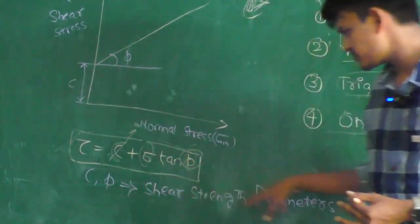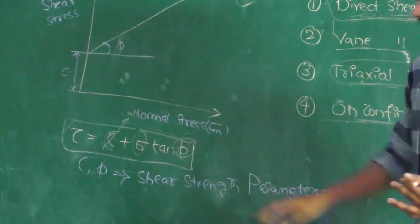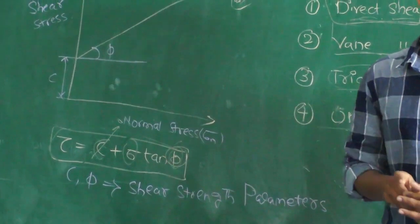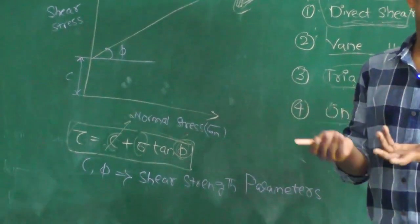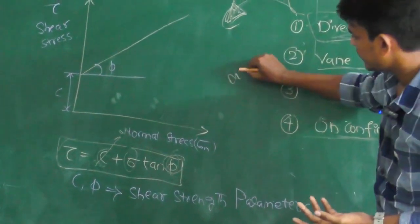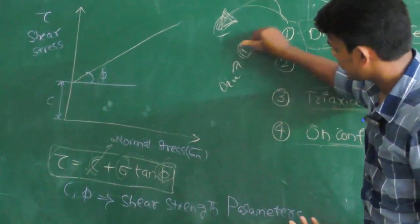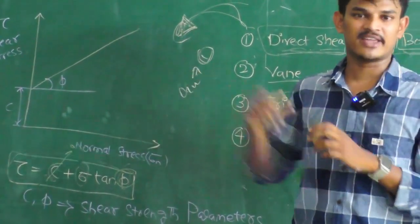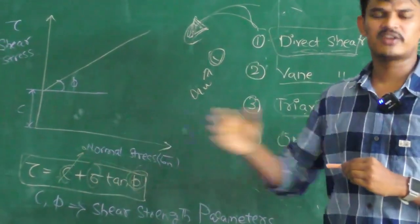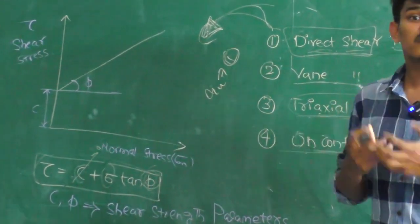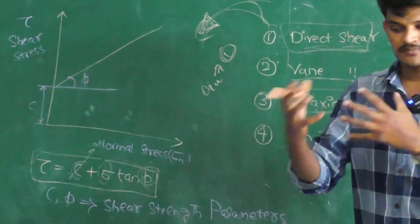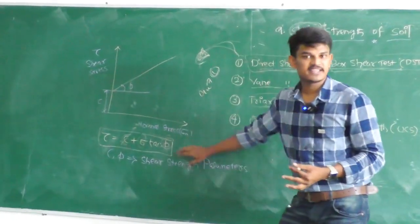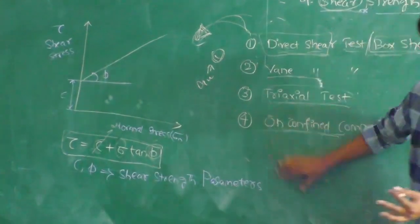C and phi are also known as shear strength parameters. They are very important in estimating the bearing capacity of the soil. We have the bearing capacity formula Q_u in terms of C and phi — for strip footing, square footing and so on. In order to estimate the bearing capacity of that particular soil, we definitely need C and phi. C and phi can be obtained using these four methods.